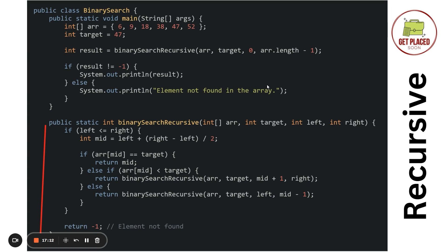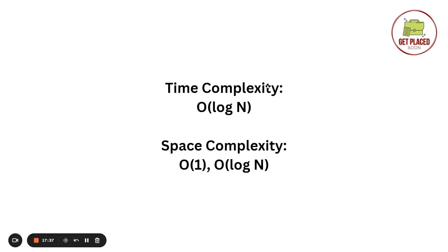The time complexity of both iterative and recursive binary search is O(log n), where n is the size of the array. This is because at each step the search interval is halved, reducing the number of remaining elements to consider. For space complexity: the recursive implementation is O(log n) due to the recursion call stack, since each recursive call is stored on the stack. The iterative implementation has O(1) constant space complexity, as no extra space is used.